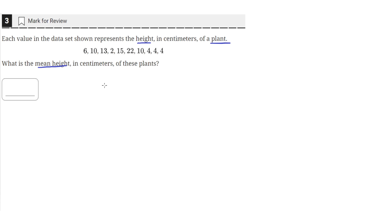Okay, so the formula for the mean of a set of data points is the sum of all the points, which would in this case just be adding up all the heights here, 6 plus 10 plus 13 plus 2 and so on, and dividing that by the number of data points.